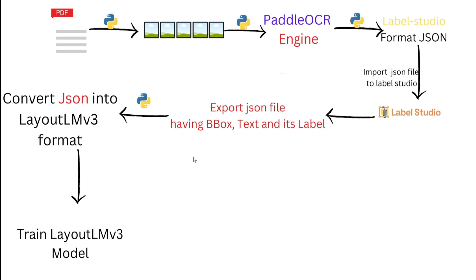Hello everyone. In the last video we saw how to convert a scanned PDF into images, then extract characters from those images, label them in Label Studio, and export the labels into a JSON file. In this video we will learn how to convert that exported JSON file from Label Studio into the format needed to train a LayoutLMv3 model.